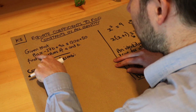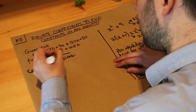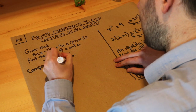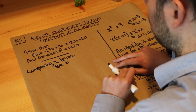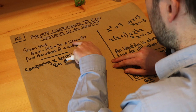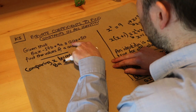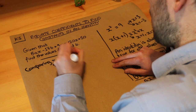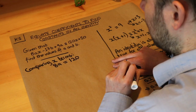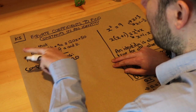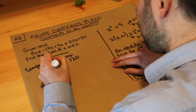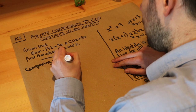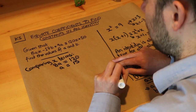What's the coefficient of the x term on the left-hand side? The thing in front of the x term is 8a. So we have 8a on the left, and that must equal the coefficient of the x term on the right. The coefficient on the right is 120. So 8a must equal 120 — they have to match. Dividing by 8, we get a equals 15.